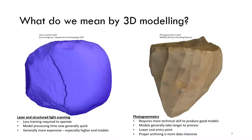While scanning and photogrammetry are the two most common methods of making models, they are not the only ones. Coordinate measuring machines and computed tomography scanning have both been used in the past, but have essentially been superseded by scanning and photogrammetry, at least for the moment.